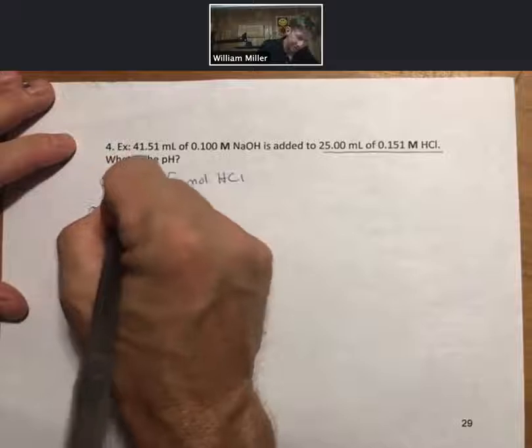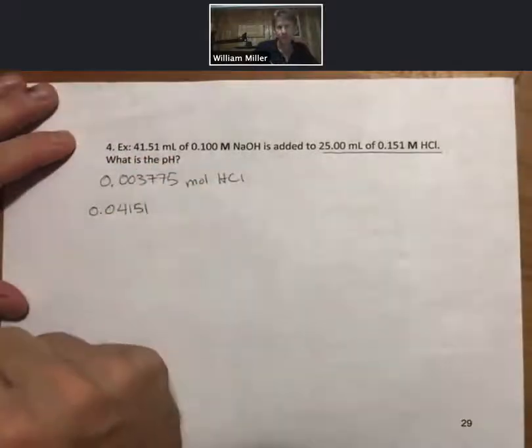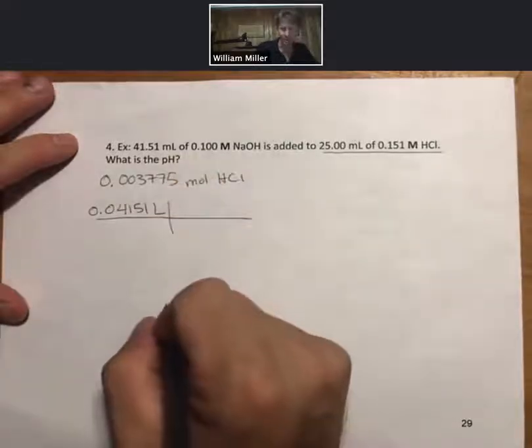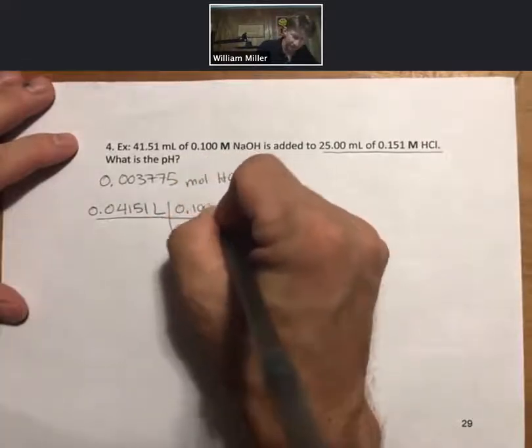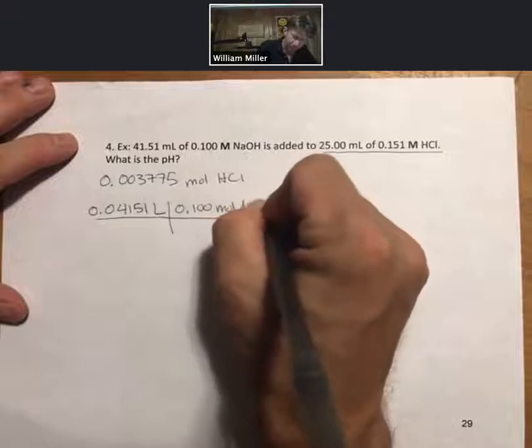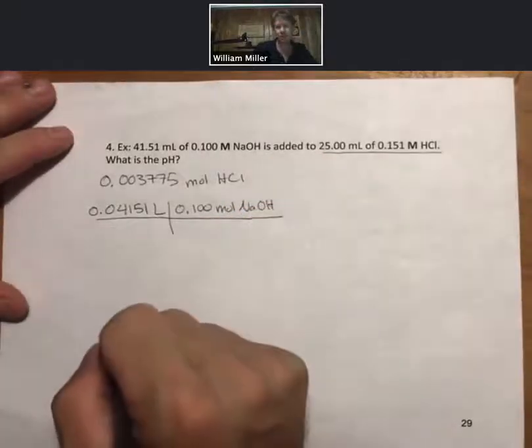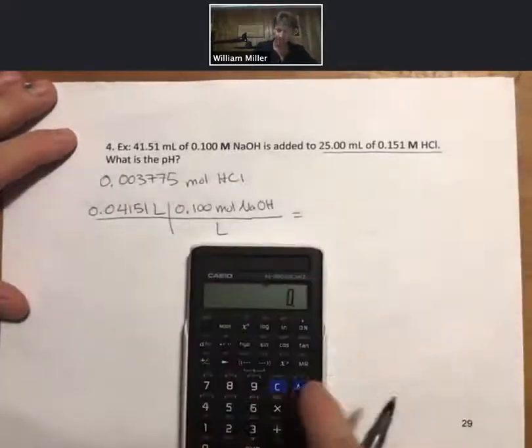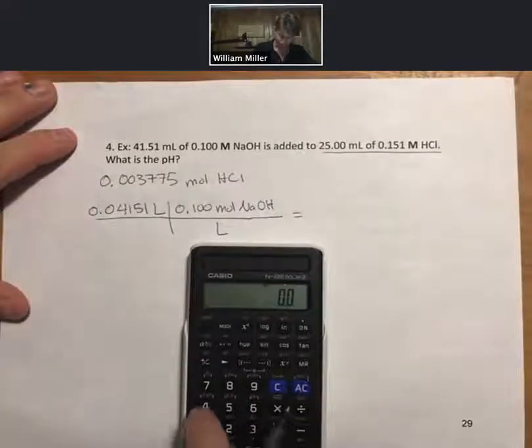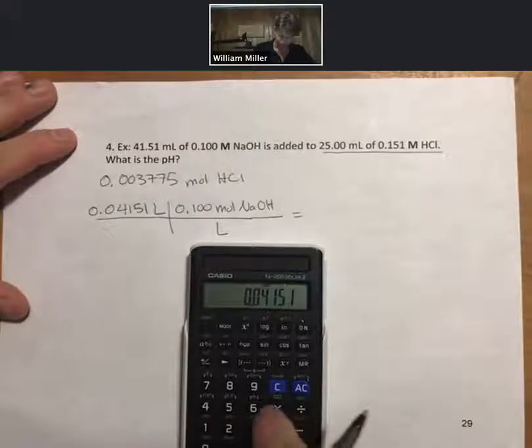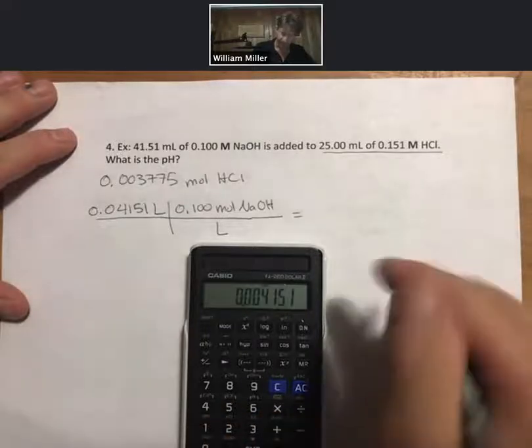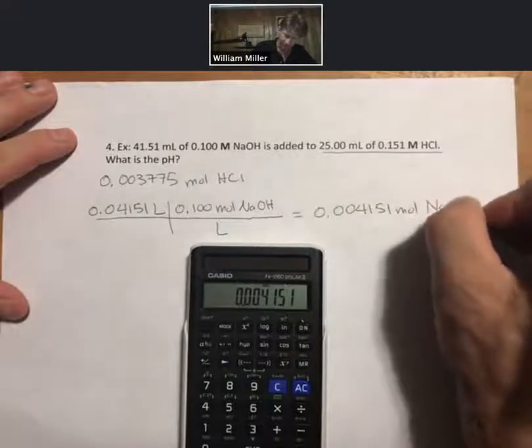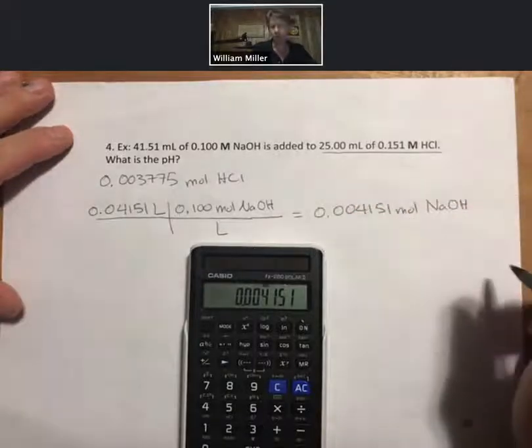Now we have 0.04151 liters of the sodium hydroxide solution. We're going to go ahead and use the molarity of sodium hydroxide, break it up into moles per liter of sodium hydroxide. And now we get 0.004151 moles of sodium hydroxide.